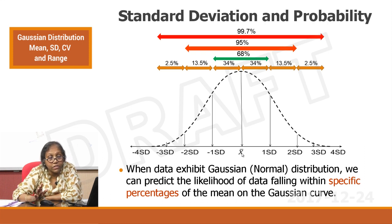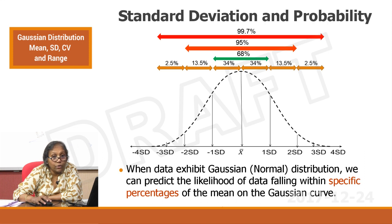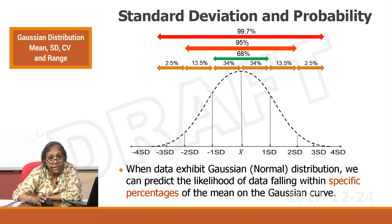This is the concept of dispersion and probability. Because this pattern exists — specific percentages clustering around the mean on a Gaussian curve — this rule is called the 68-95-99 rule.